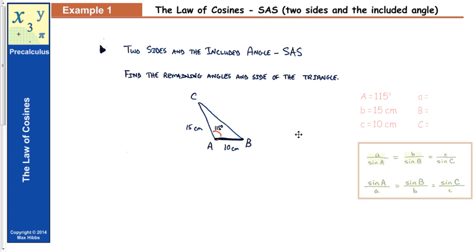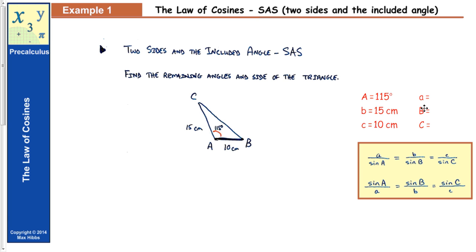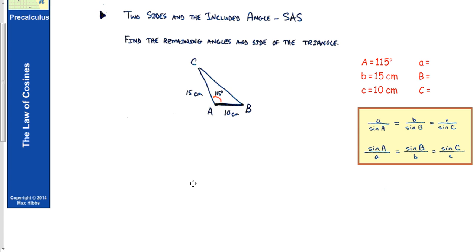We know angle A, side B, and side C. We need to find side A, angle B, and angle C. This is the side-angle-side situation where the law of sines won't work because we can't take any pair of ratios and solve for the one unknown — we always end up with two unknowns. So we have to use the law of cosines.